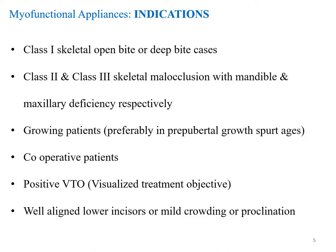What are the indications of myofunctional appliances? It can be used in Class 1 skeletal open bite or deep bite cases. It can also be used in Class 2 and Class 3 skeletal malocclusion with either mandibular or maxillary deficiency. It can be used in growing patients; however, you have to assess the growth spurt and it has to be used in a pre-pubertal growth spurt age group. It needs good compliance and cooperation from the patient. There also has to be a positive visualized treatment objective and well-aligned lower incisors or mild crowding or proclination.